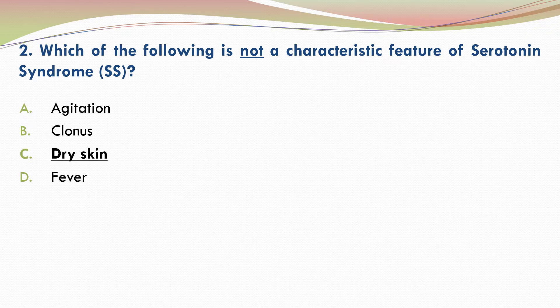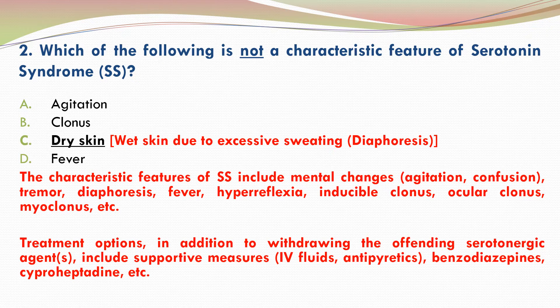C — dry skin. Dry skin is not a characteristic feature of serotonin syndrome, while the other three are. Wet skin due to excessive sweating, or diaphoresis, is a characteristic feature of serotonin syndrome.